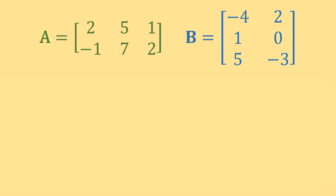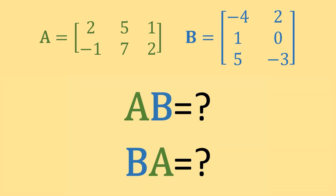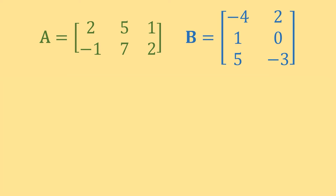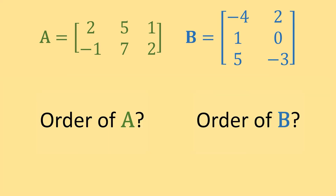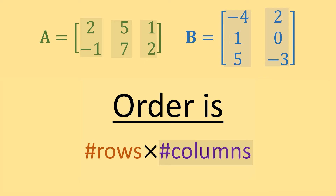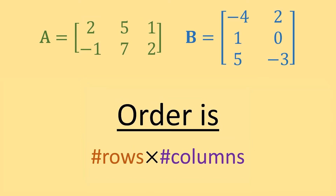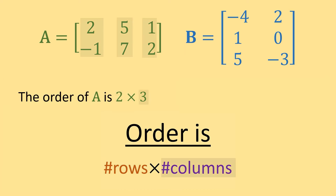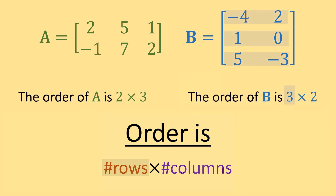It's important to understand what the result is going to be when we multiply two matrices. To figure that out, we have to understand the order of both matrices first. The order of a matrix is your number of rows by your number of columns. Since A has two rows and three columns, the order of matrix A is 2 by 3. Matrix B has three rows and two columns, so the order of matrix B is 3 by 2.